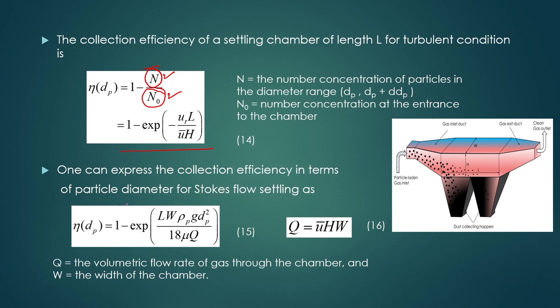One can express collection efficiency in terms of particle diameter for Stokes flow settling condition: eta(dp) = 1 - exp(-ut*L / (u_bar*H)) by substituting the value of settling velocity ut and average velocity of particles inside the chamber. If there is one chamber (n=1), use Q directly; if there are n plates, use Q/n and h/n. Q is the volumetric flow rate of gas through the chamber and W is the width of the chamber.